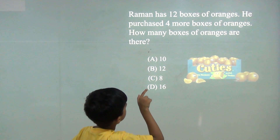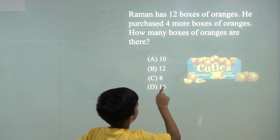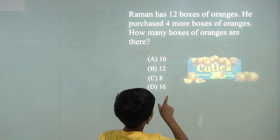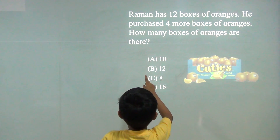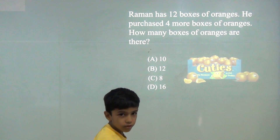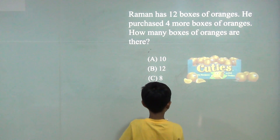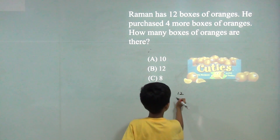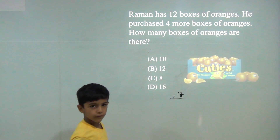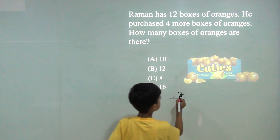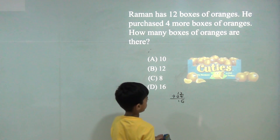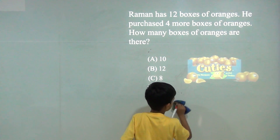Roman has 12 boxes of oranges and purchased 4 more boxes of oranges. How many boxes of oranges are there? So we will do 12 plus 4. 2 plus 4 is 6, 1 plus 0 is 1. So the answer would be 16.